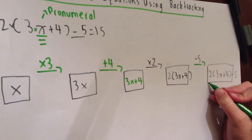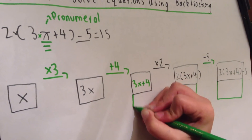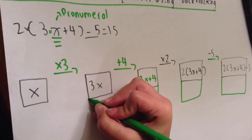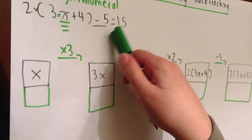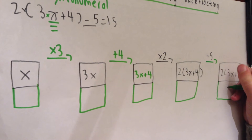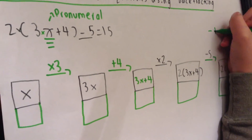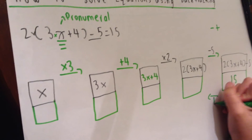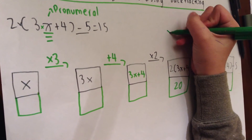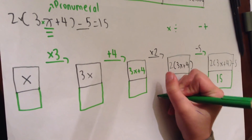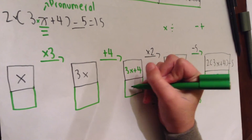Now it's time for backtracking. We draw another box under it. Backtracking is doing the opposite, so going backwards. We write the answer, which is 15, because we're going backwards. What's the opposite of minus? A plus. So we plus this by 5, and 15 plus 5 is 20. Now what's the opposite of times? A divide sign. We draw an arrow to go backwards. So what's 20 divided by 2? 20 divided by 2 is 10.